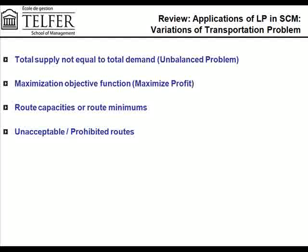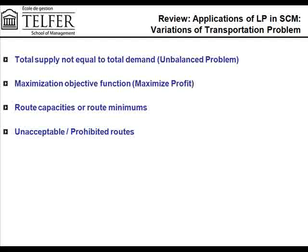I also briefly mentioned how you can go about solving a problem where the supply is not equal to demand and there are some unacceptable or prohibited routes. For unacceptable or prohibited routes, the solution is very simple: you just assign an arbitrarily high cost to those routes so that Solver does not use them when it creates a solution for us.